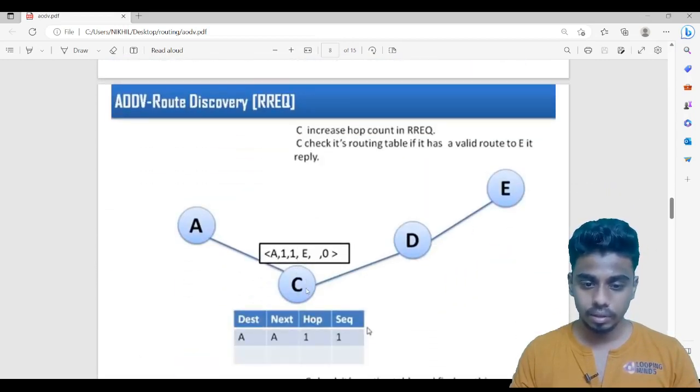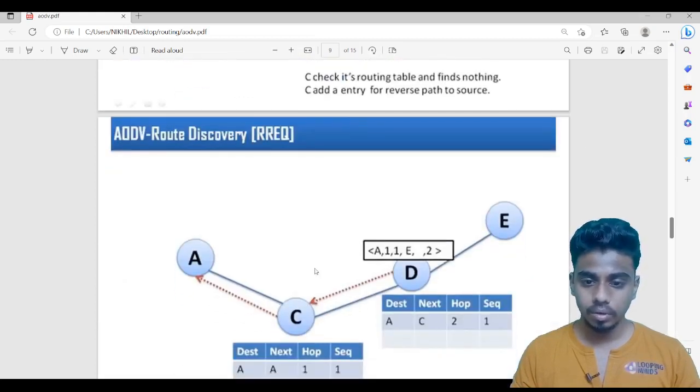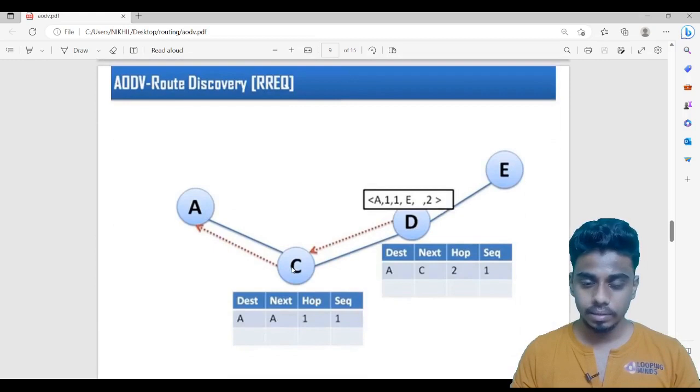Now C will note one thing. It will create a route table. It will tell if the destination is A, if I have to go to A, then next hop should be A, hop is 1 and the sequence number of A is 1. C checks its routing table if it has valid route to E. It does not have any valid route to E. Now after adding this in the routing table, this will forward the packet by increasing the hop count.